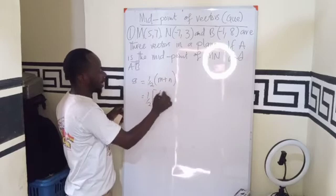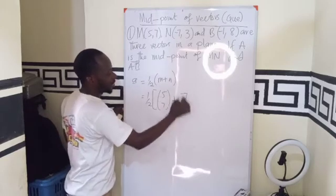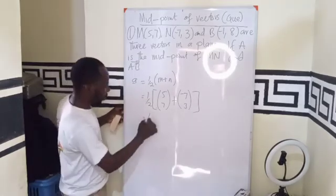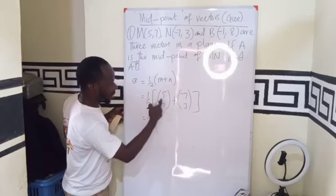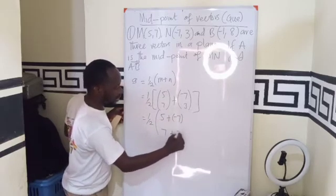So M is (5, 7), N is (-7, 3). So now we perform the operation. It will be 5 plus -7, 7 plus 3.